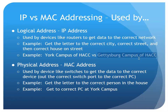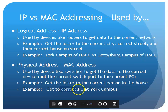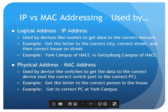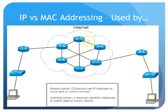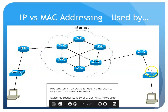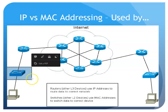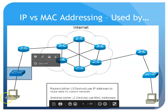The MAC address — the physical address burnt into our NIC — is the one that gets used to get the data to the correct PC at the destination network. In our example, that means getting it to the correct PC at the York campus. As data moves through a network, the IP address is used to route through routers out on the internet. Once it gets to the York campus, the router is done, and the switch uses the MAC address to get it to the correct computer.